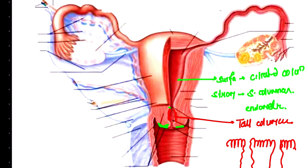As we know, the vagina consists of mucus, but that mucus is not produced by the vagina itself. It is produced by the endocervix — specifically by the tall columnar compound cleft cells of the endocervix.